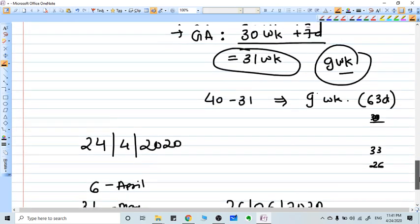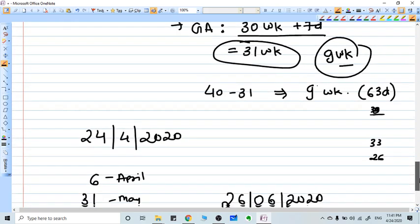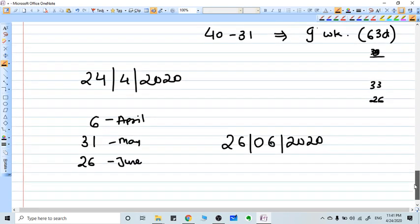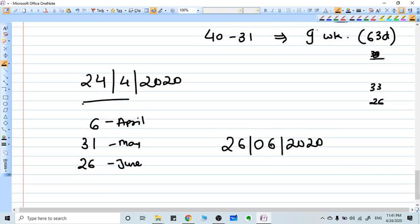If you talk about 9 weeks, it is 63 days. Just add 63 days into this date, that is 24th of April.